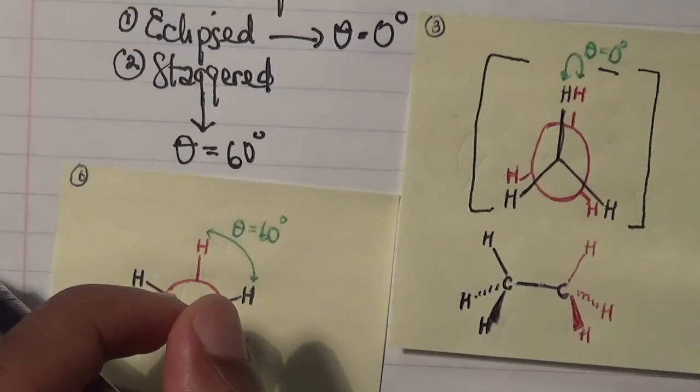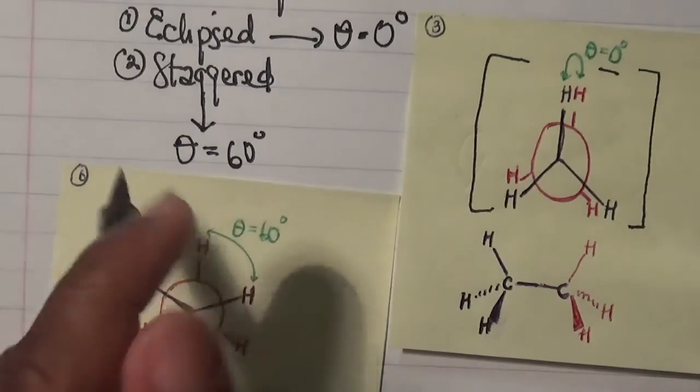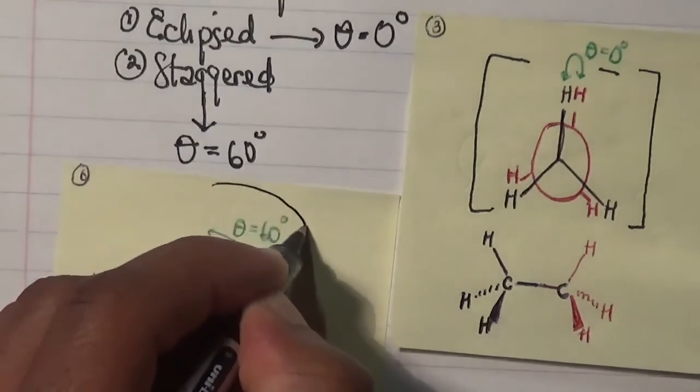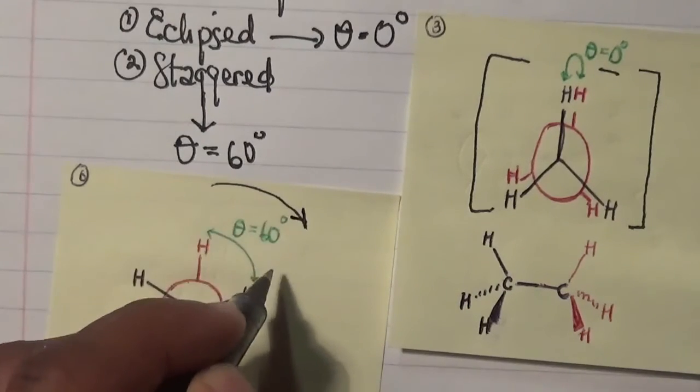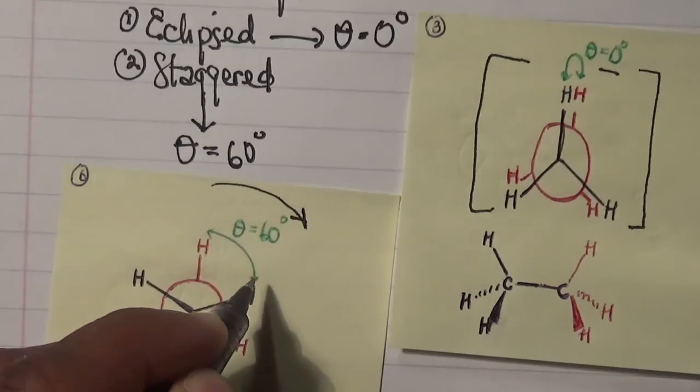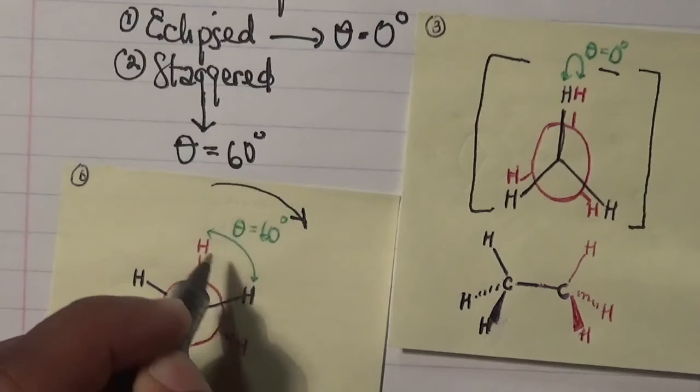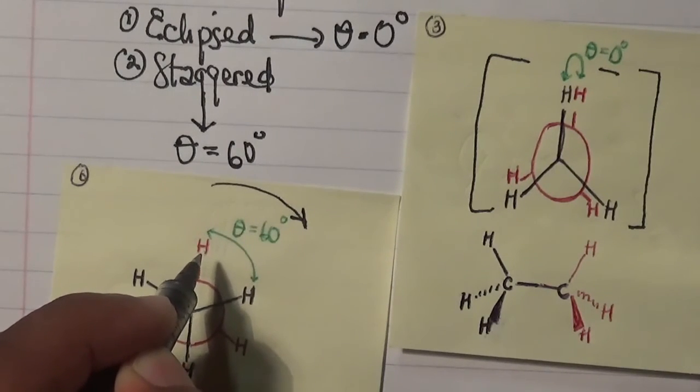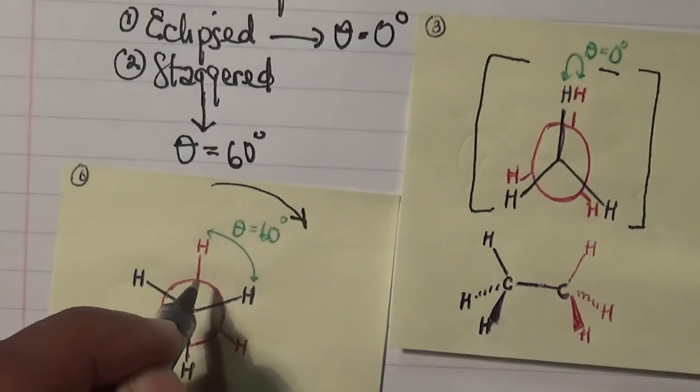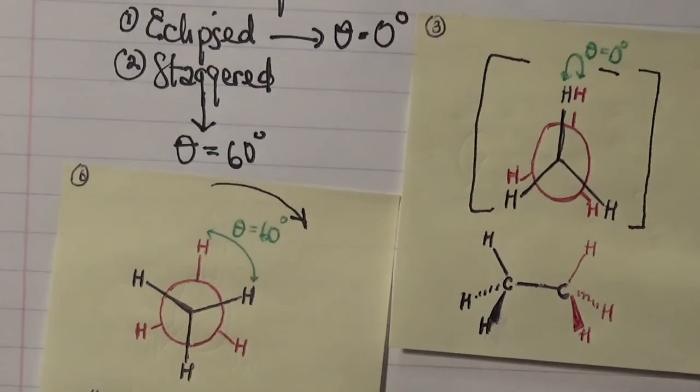What I realize is that the hydrogen atom moving clockwise forms an angle of 60 degrees with respect to the back hydrogen atom bonded to the back carbon, which is represented by the circle over here.